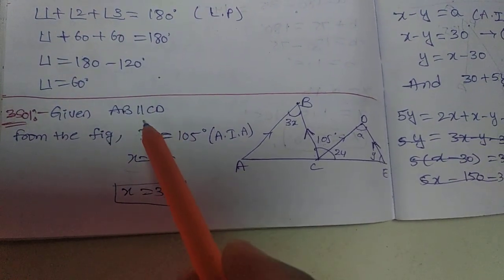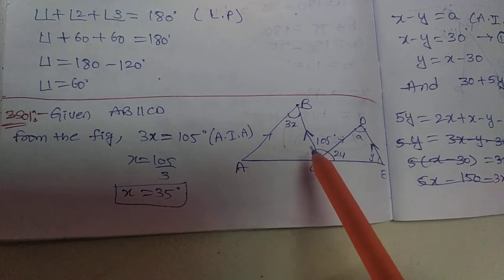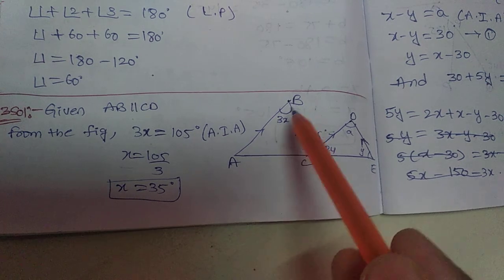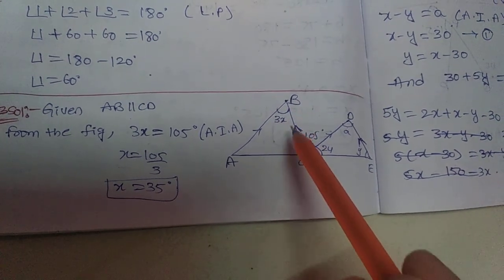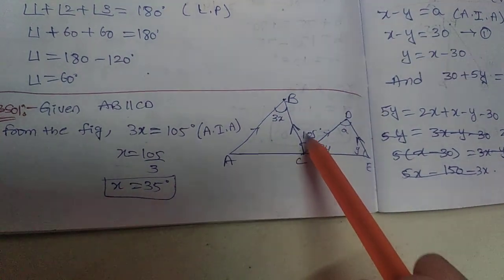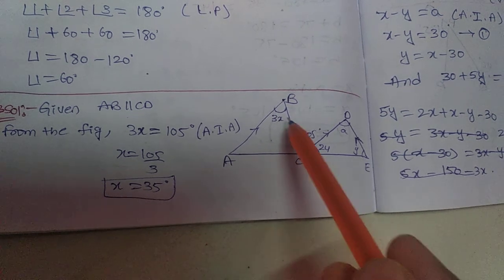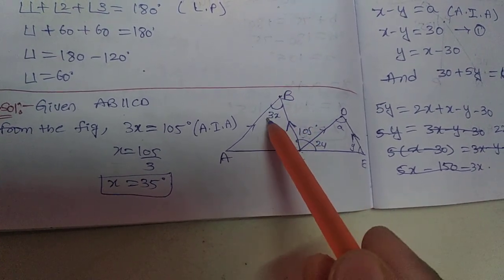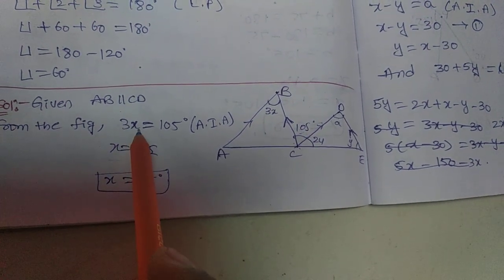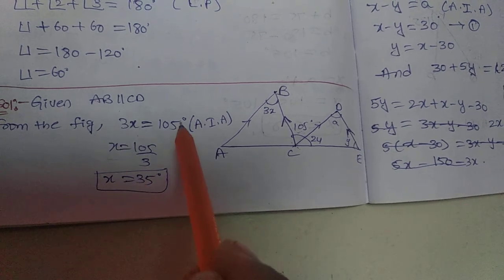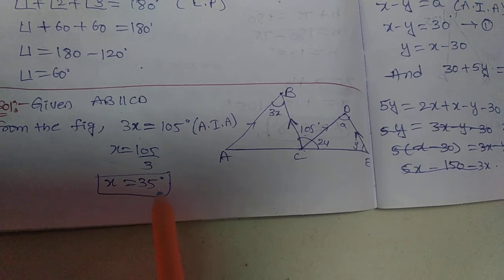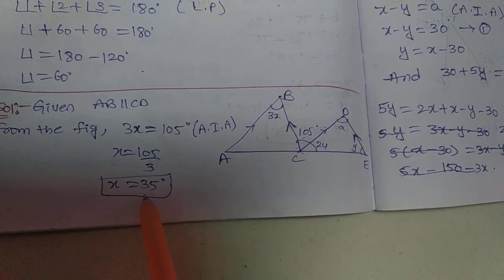Given: AB is parallel to CD. From the figure, AB and CD are the two parallel lines and this is the transversal line. Here 3X and 105 degrees are the alternate interior angles, and alternate interior angles are always equal. So 3X equals 105 degrees. Solving for X: 105 divided by 3 equals 35 degrees. So X equals 35 degrees.